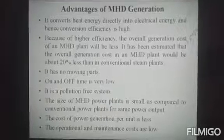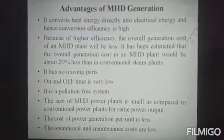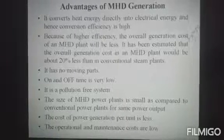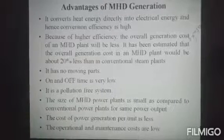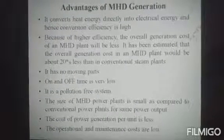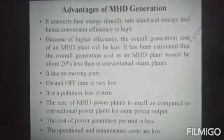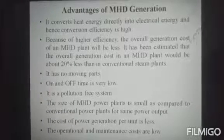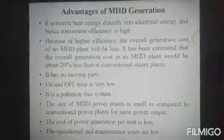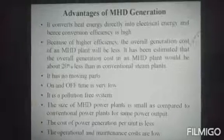Advantages of MHD generation: It converts heat energy directly to electrical energy, hence the conversion efficiency is high. Because of the high efficiency, the overall generation cost of an MHD plant will be less — estimated at about 20% less than a conventional steam plant. It has no moving parts and on/off time is very low. It is a pollution-free system. The size of an MHD power plant is small compared to a conventional power plant for the same power output. The cost of power generation per unit is less, and operational maintenance costs are low.